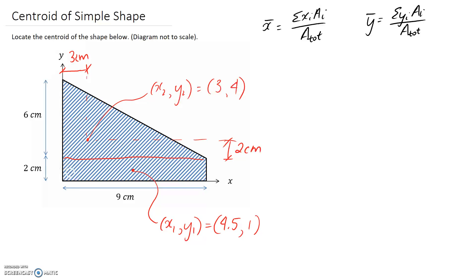If we start with the first one, this is my shape 1. For this first one, it's going to be the area of the rectangle that it is. Area of a rectangle is length times height, so it's going to be 9 centimetres multiplied by 2, which is 18.